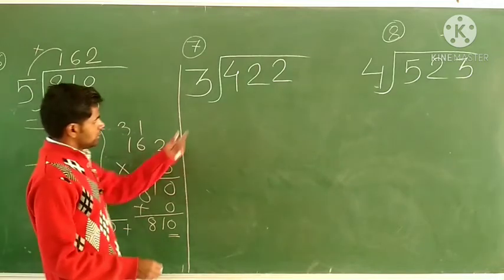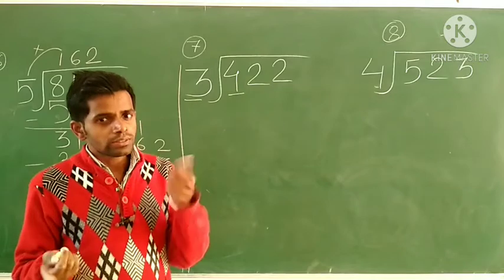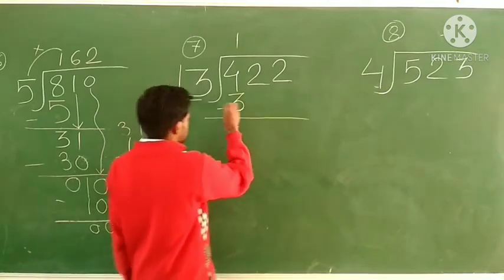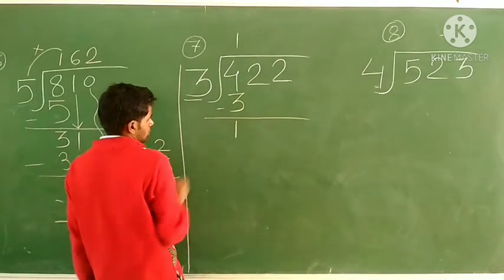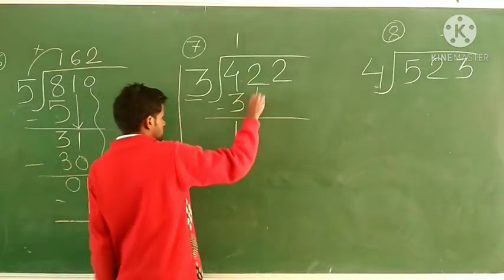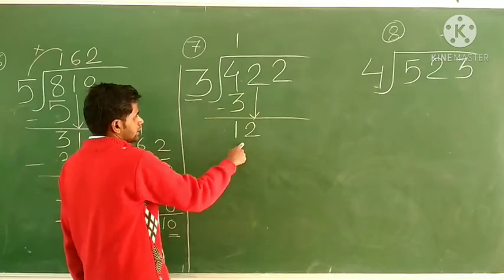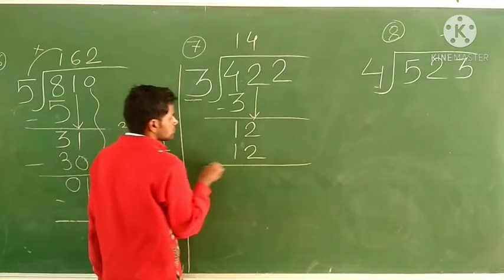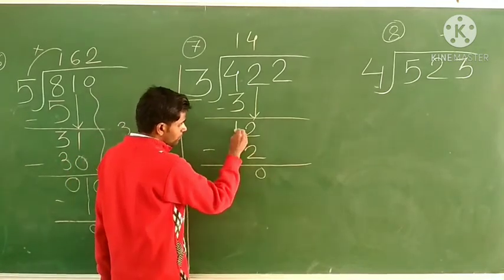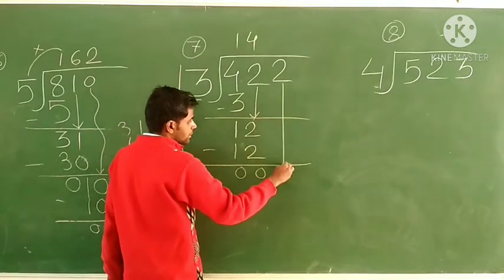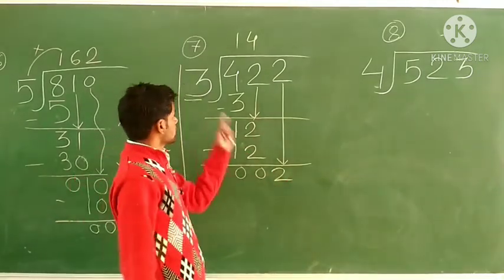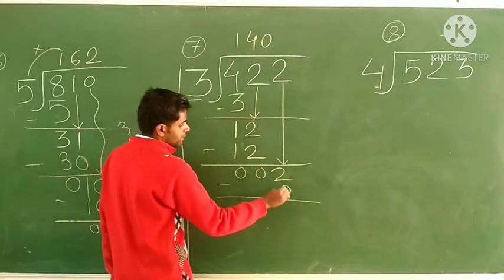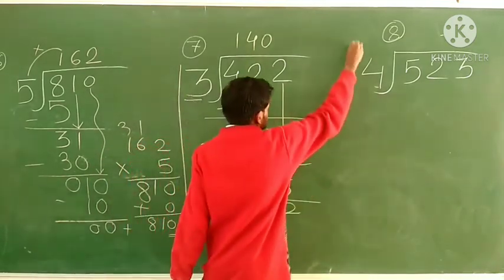Next problem: divide 422 by 3. Take single digits. 3 and 4: 3 ones are 3, 3 twos are 6 — 6 is greater, so take 3 ones are 3. Subtract: 4 minus 3 leaves 1. Next digit 2 comes down making 12. Check table of 3: 3 fours are 12. Subtract: 2 minus 2 is 0, 1 minus 1 is 0. Next digit 2 comes down. 2 is not in table of 3, so we take 3 zeros are 0. 2 minus 0 leaves remainder 2. Quotient is 140, remainder is 2.